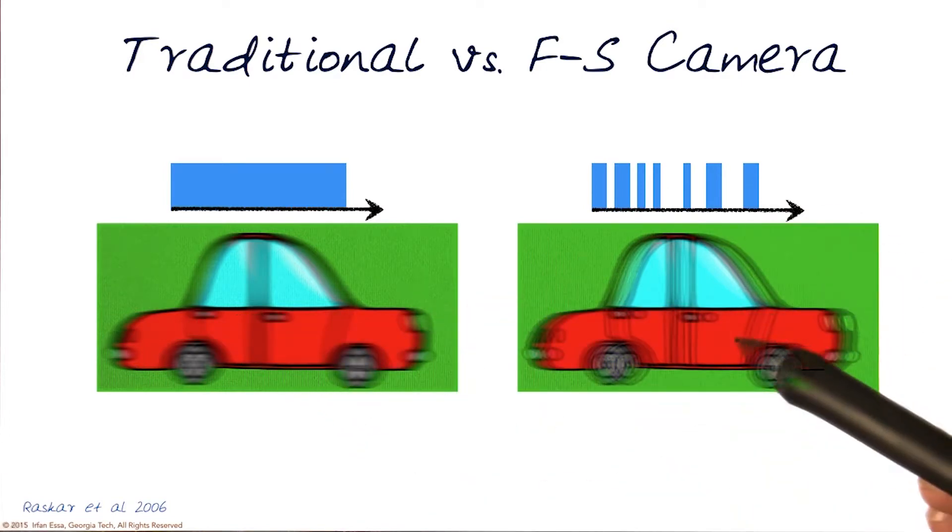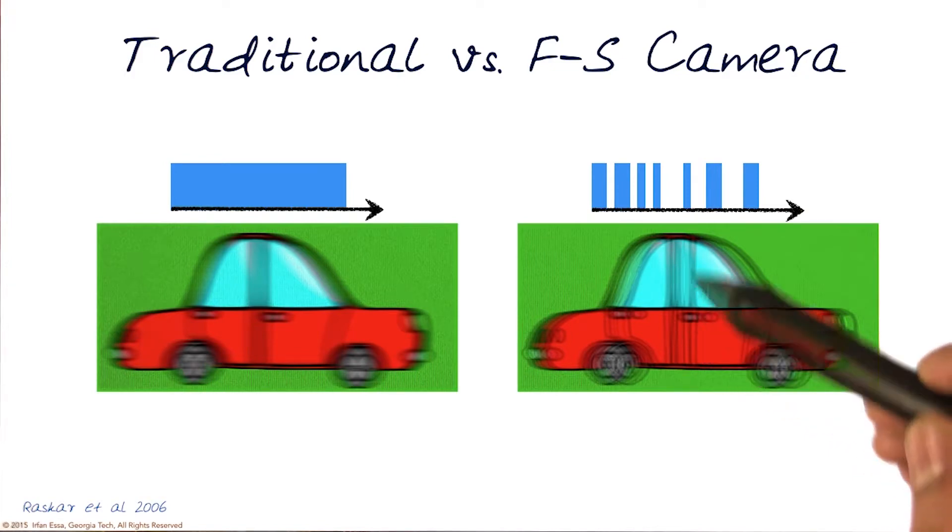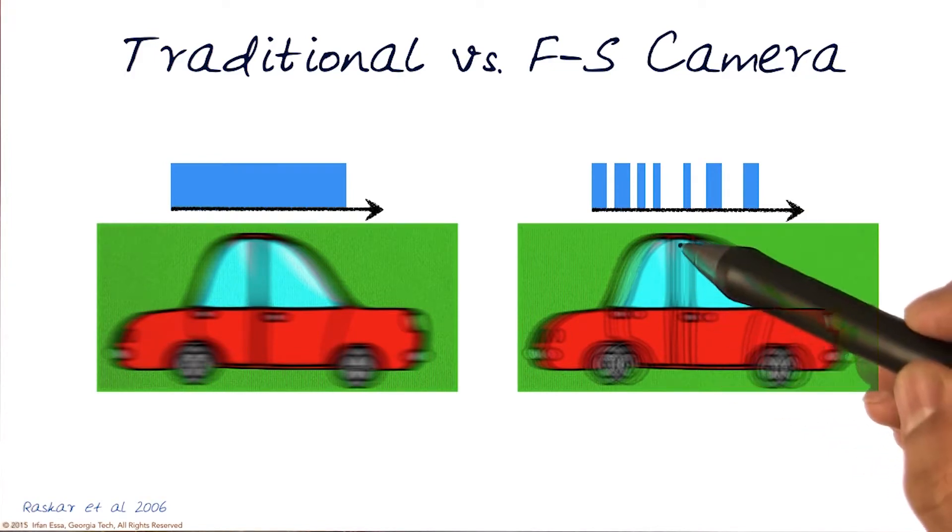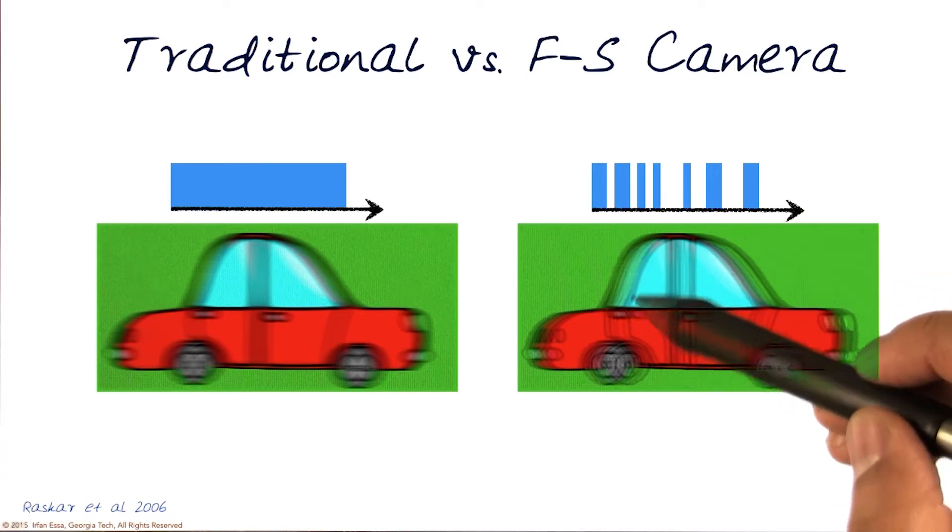Here, everything is blurred. In this one, you do see some blur, but there's a better signature. For example, you see these lines at different positions.